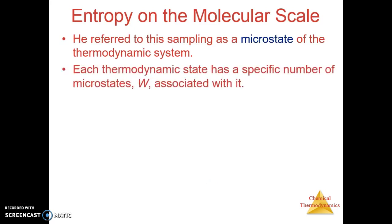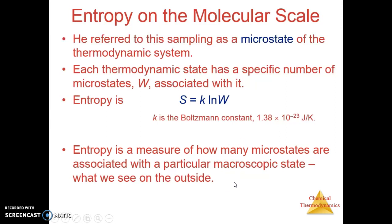Each thermodynamic state has a specific number of microstates. The number of microstates is given the variable capital W. Boltzmann has proposed that the entropy is equal to the natural log of the number of microstates times a constant, the Boltzmann constant, which is in energy per kelvin, energy per temperature. Because S is q divided by T, q is energy, T is temperature in kelvin. Entropy is a measure of how many microstates are associated with a particular macroscopic state.